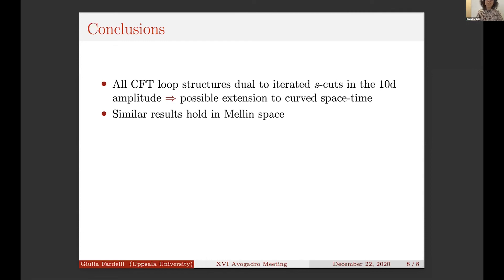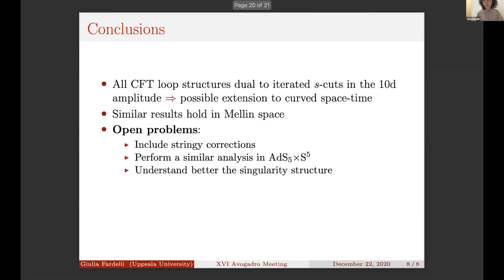Let me conclude with some open problems. First of all, one can think of including some stringy corrections, so going away from the strict λ→∞ limit. As I was mentioning, perform a similar analysis in full AdS5×S5. And finally, understand better this singularity structure and what we can infer about a general amplitude knowing just these leading logarithms. Thank you for your attention.